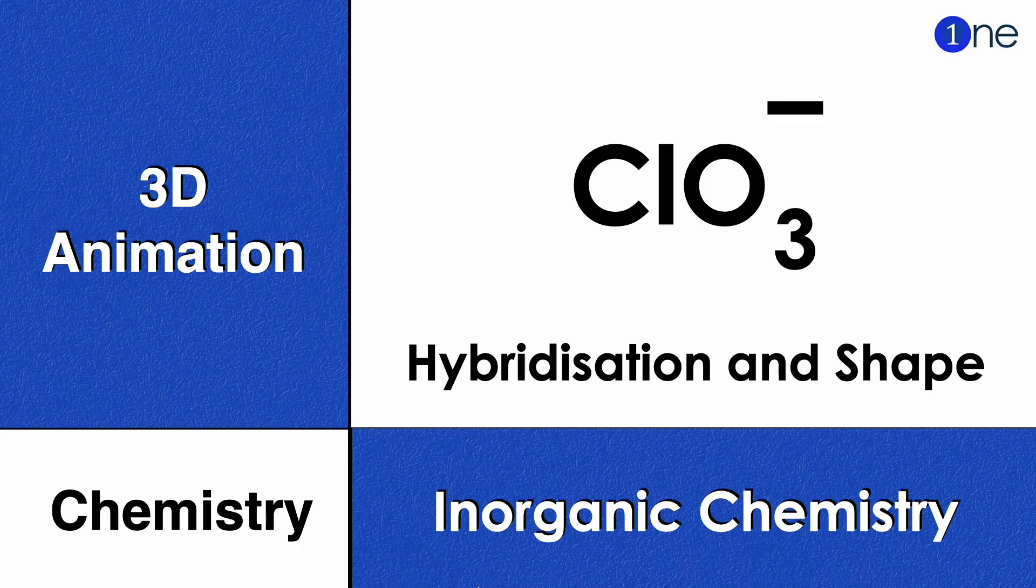Welcome to One Inorganic Chemistry. We are going to find the hybridization and shape of chlorine trioxide anion (ClO3-) with the help of 3D animation.